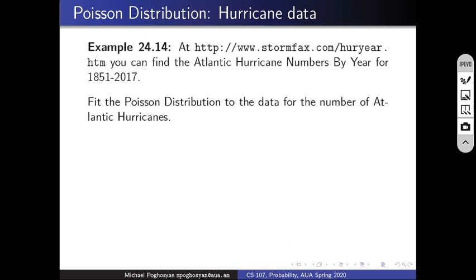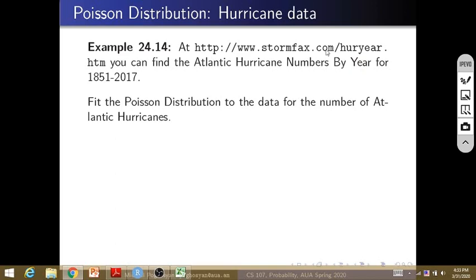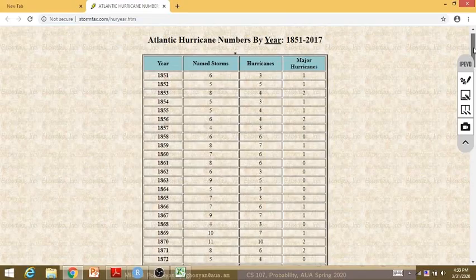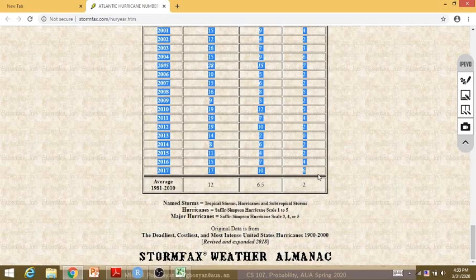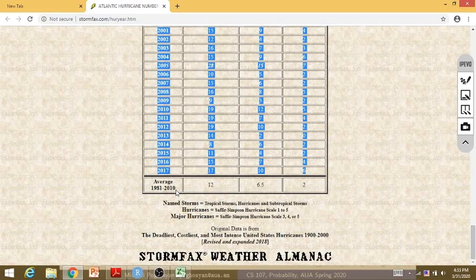The next example is hurricane data. In the first part of the lecture on Poisson distribution, I discussed Atlantic hurricane numbers, and here is some real data from a web table. I copy the data — excluding the last average row — and paste it into Excel.